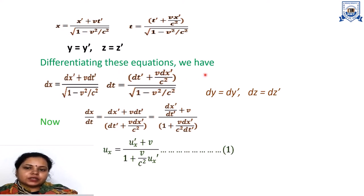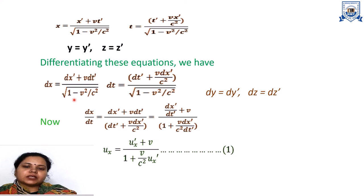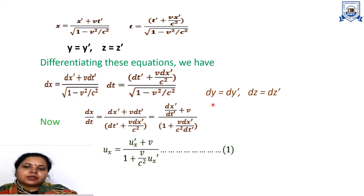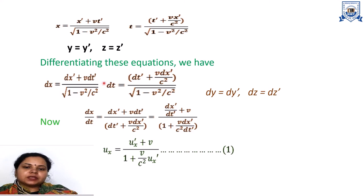Now differentiating — or more precisely, partially differentiating — these equations, we get: dx = (dx-dash + v·dt-dash) / √(1 − v²/c²), dt = (dt-dash + v·dx-dash/c²) / √(1 − v²/c²), dy = dy-dash, and dz = dz-dash. Since dx/dt gives velocity, we divide the dx equation by the dt equation.